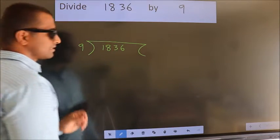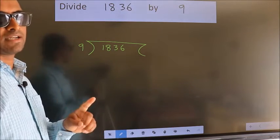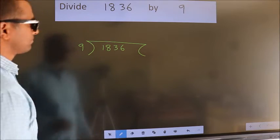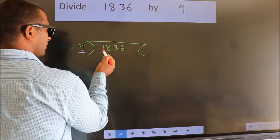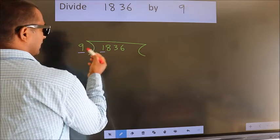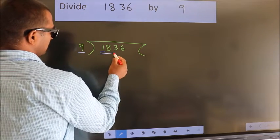This is your step 1. Next. Here we have 1. Here 9. 1 smaller than 9. So we should take two numbers, 18.